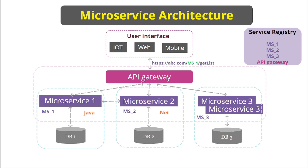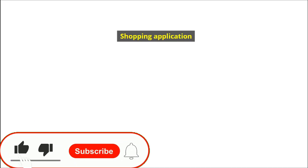Whenever there is a need for any resource, the user interface connects to the API gateway through a URL that contains the application name of the target microservice. The API gateway then talks to the service registry with that application name — for example, MS_ONE. The API gateway asks the service registry if it has information for MS_ONE. If it does, the service registry returns that information to the API gateway, and the API gateway redirects the request to that particular service.